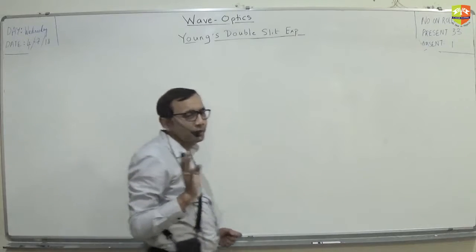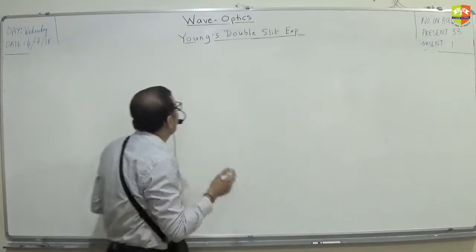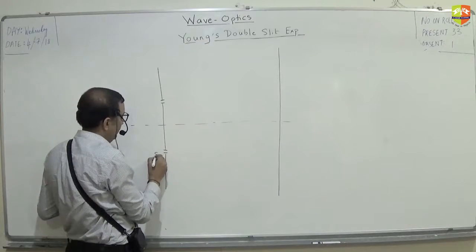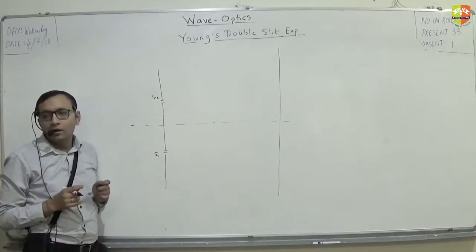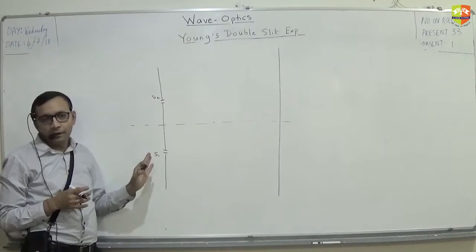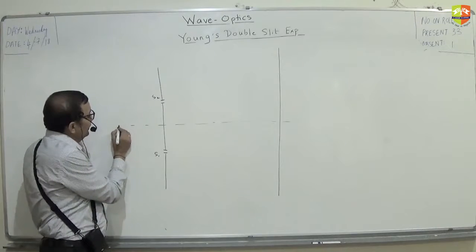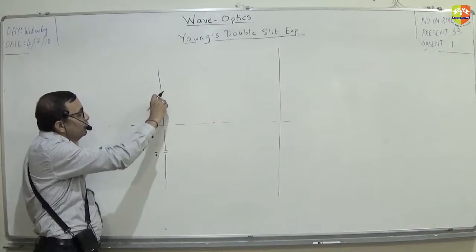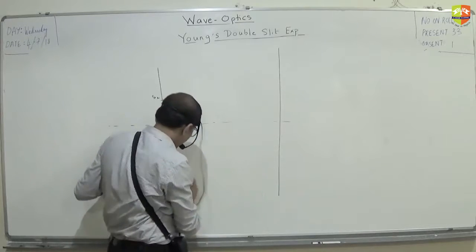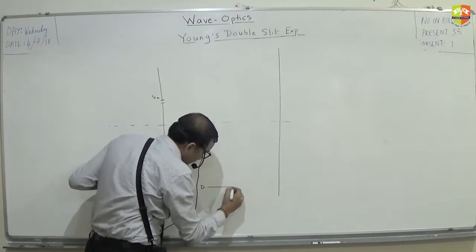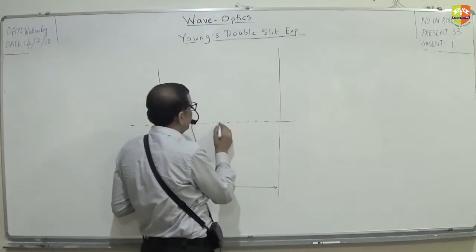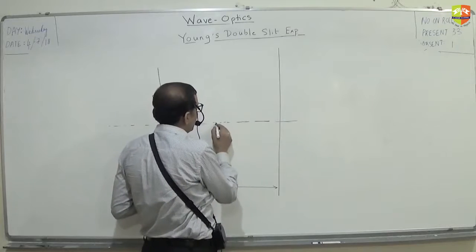Now first let us draw the experimental setup and then we will discuss it in detail. These are the two slits, let's call them S1 and S2. These two slits are the openings on this plane, so light will come from far and it will hit these openings and then light will come out from here and there. And there is this screen at a distance D. At distance D there is a screen and we observe the things that happen on the screen.